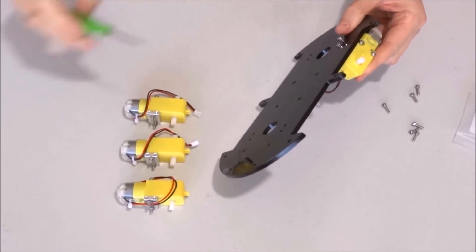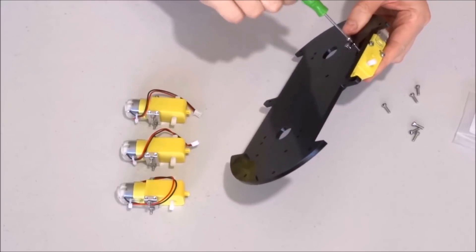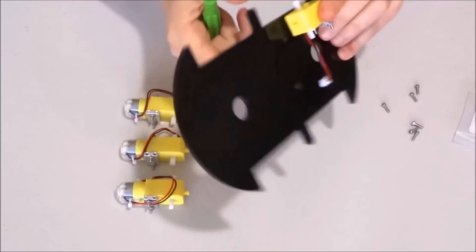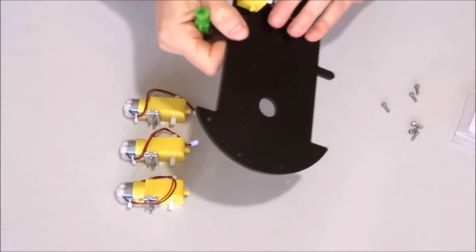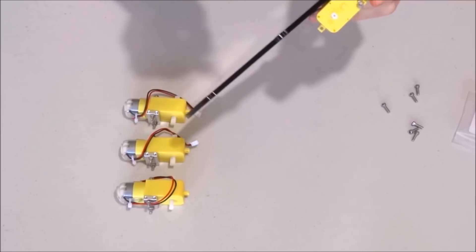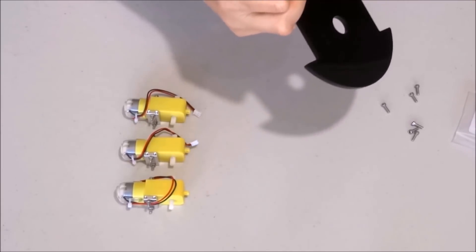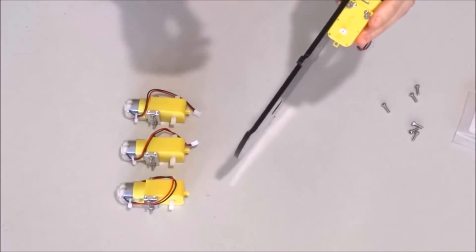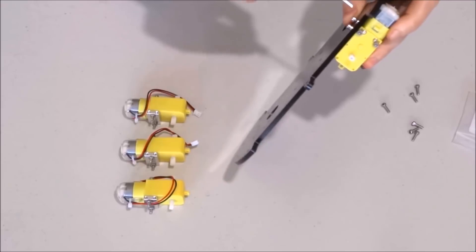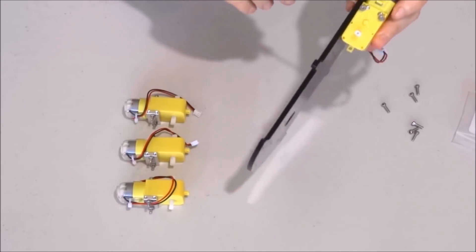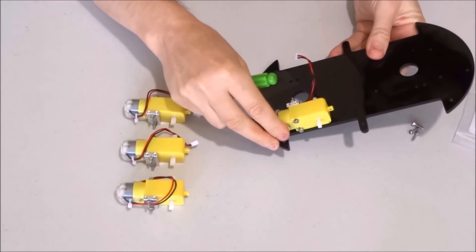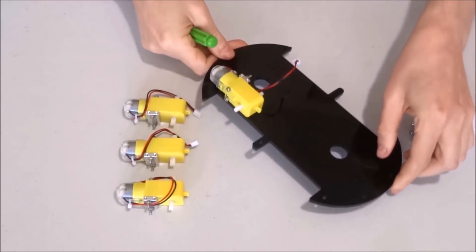Insert the second bolt and again use the hexagonal tool to tighten it. If necessary loosen a little bit the bolts so we can properly adjust the motor position. For now I will not over-tighten them, just slightly so I can adjust the position of the motor at a later point.